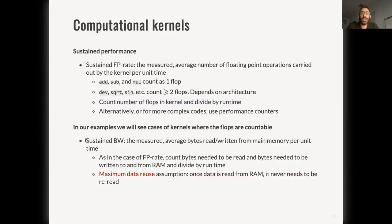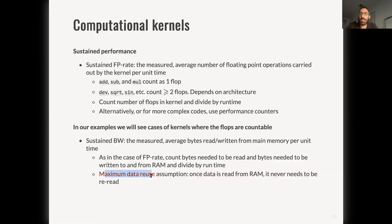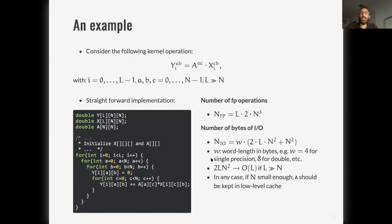Sustained bandwidth is the measured average bytes written from memory per unit time. Usually you have a computational kernel and know how much data you need to read and write to complete it, so you can know how many bytes of memory had to be read and written from RAM in a given time. There are some assumptions that enter here — specifically a maximum data reuse assumption — that you need to make in order to simplify this calculation.